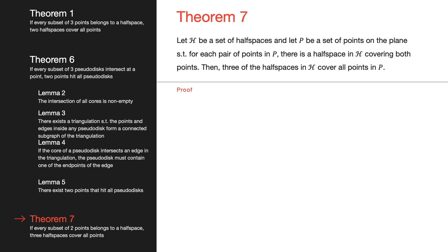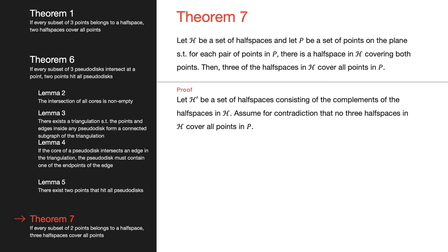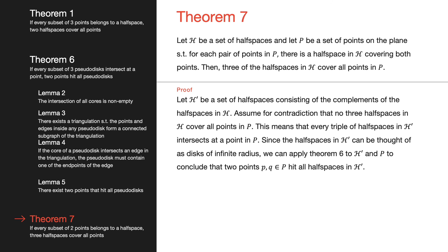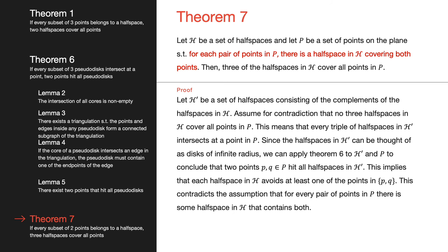Theorem 7 states that if every pair of points is covered by a half-space in our set H, then three half-spaces cover all points. Proof: take the set of half-spaces consisting of the complement to each half-space in H. Assume for contradiction that no three half-spaces in H cover all points, meaning every triple of complementary half-spaces must intersect at a point in our point set. Since a half-space can be thought of as a disk with a very large radius of curvature, we apply Theorem 6 to conclude that two points p, q hit all complementary half-spaces. This implies each half-space in H avoids at least one of p or q — a contradiction, since every pair of points must be contained in a half-space.